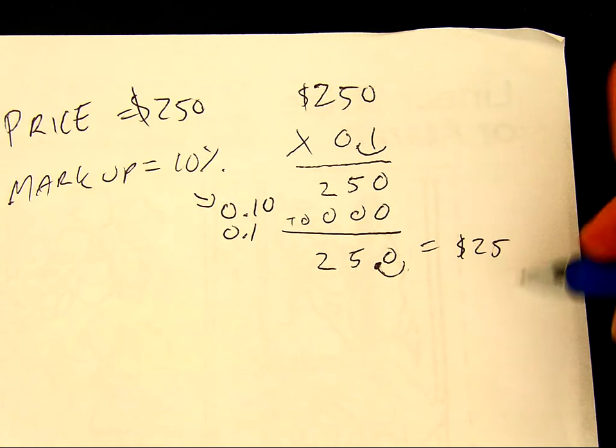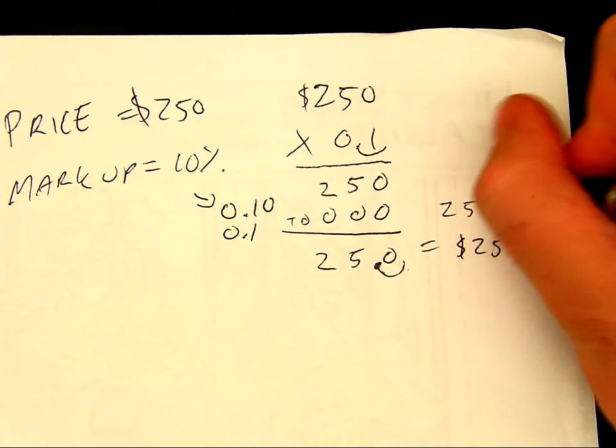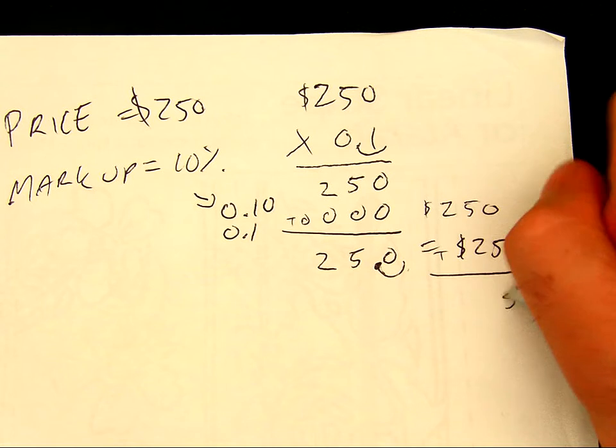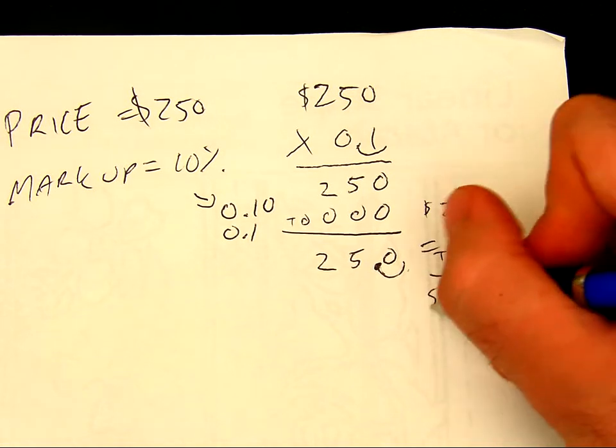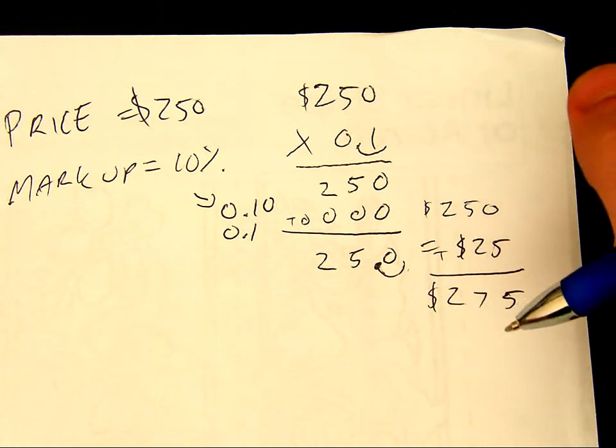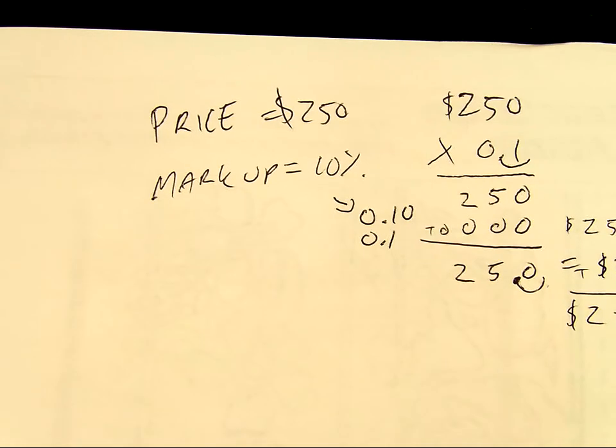Now I add that to my base, so I have $250 added up. I have 5, 7, and 2, so I should have $275. Now that's a really long way to go for a kind of simple problem.